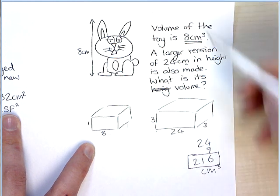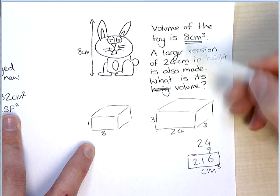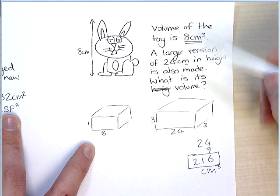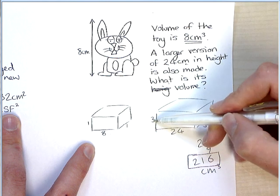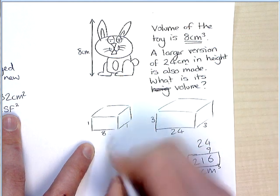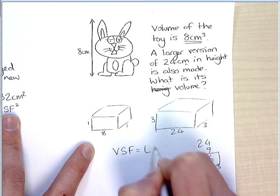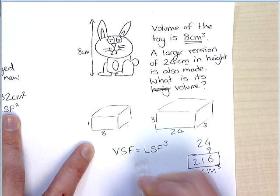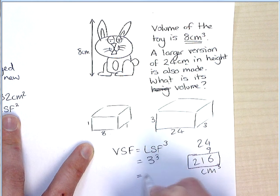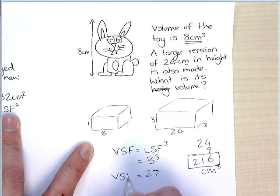So there you have it. It's not as simple as timesing it by 3. You have to times it by 3 in every dimension again. So the volume scale factor is the length scale factor cubed. So 3 cubed is 27 is the volume scale factor.